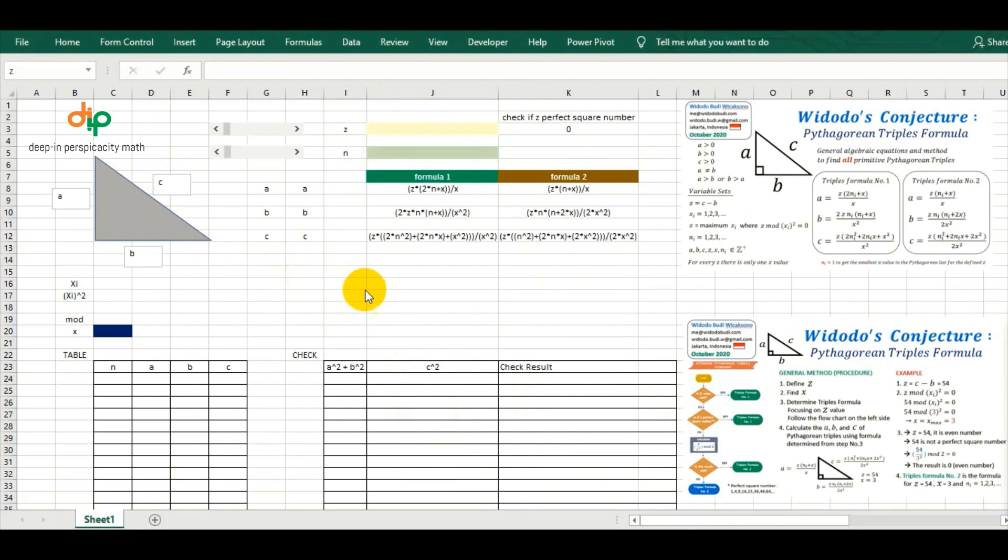This Microsoft Excel is used to test Widodo's conjecture. Please take a look at cell J3, it is named Z, and cell J5 is named as N. Another cell C20 is named as X. The formula 1 is typed based on Widodo's conjecture triples formula number 1, and the formula 2 is referred to triples formula number 2. The upper scroll bar is used to change Z value linked to the cell J3.